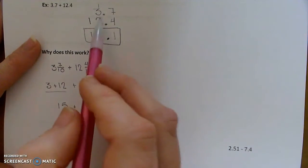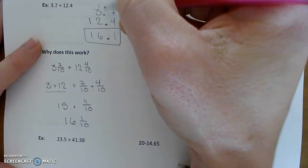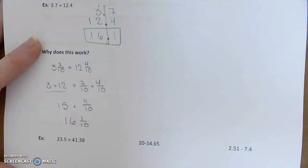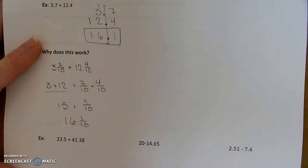So using fractions, we can kind of justify why is it that I can just add the whole number parts together, lining up the decimal places, and then add the fractional parts together, lining up the decimal places, because it works when you think about it with fractions.